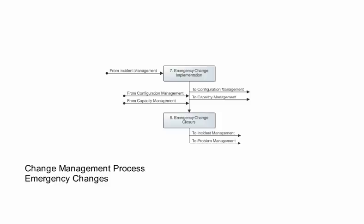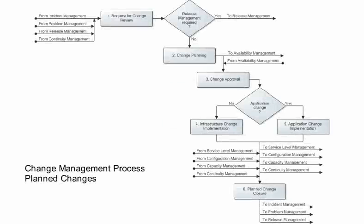The Change Management Process contains two distinct workflows. One is used for emergency changes, which are changes made according to your organization's emergency change policy. The other is used for implementing planned changes, which is what this video describes.